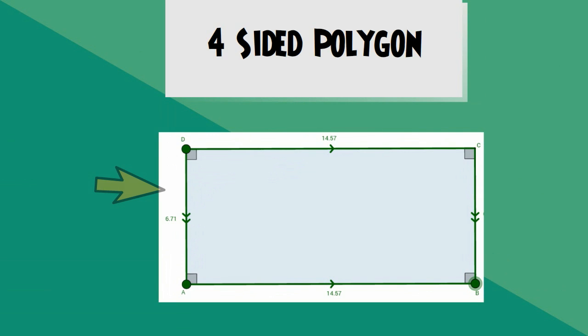A rectangle is a four-sided polygon with opposite sides being parallel.